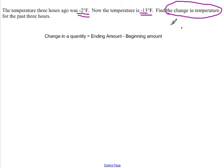It's always important to know what they're asking us to look for. We're trying to find the change in temperature for the past 3 hours. Something we want to keep in mind is what a change in a quantity means. The change in a quantity is the ending amount minus the beginning amount. That's always how we want to be thinking about this when we're talking about change. The order is going to be important. We always want to start with the ending amount and then subtract the beginning amount.